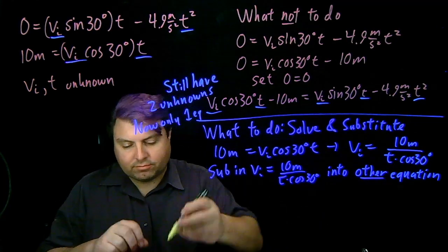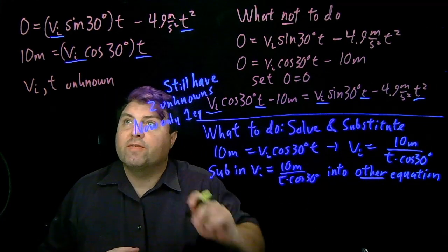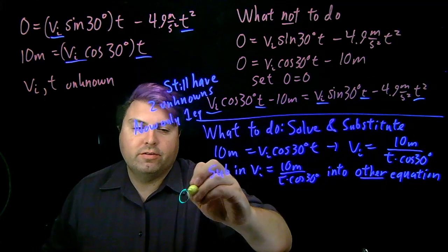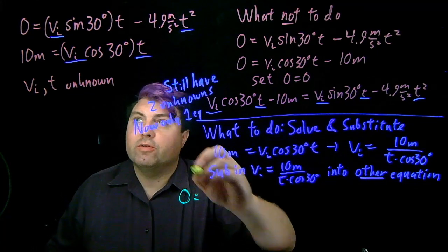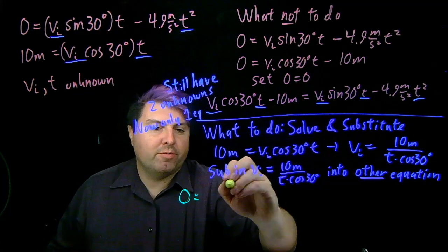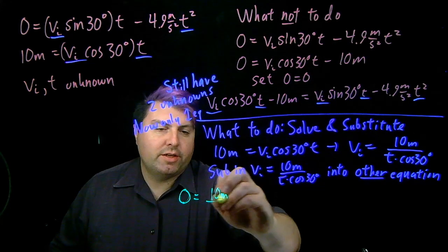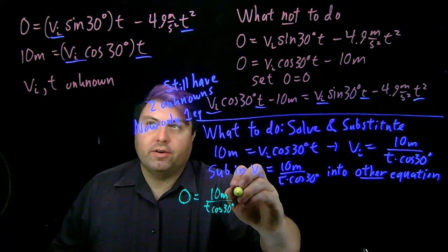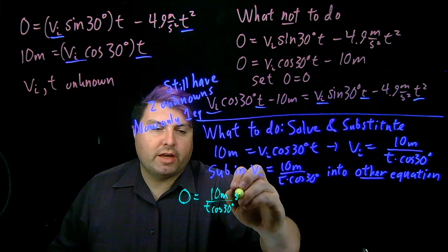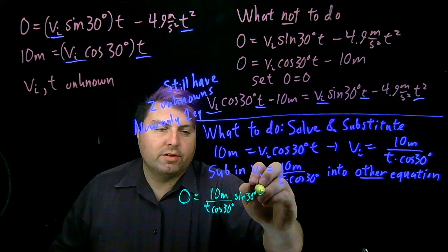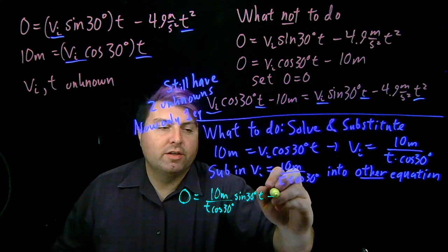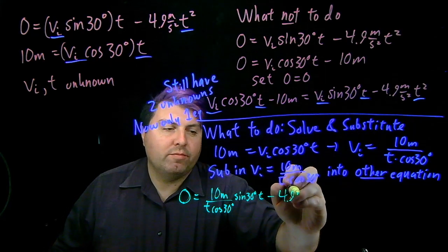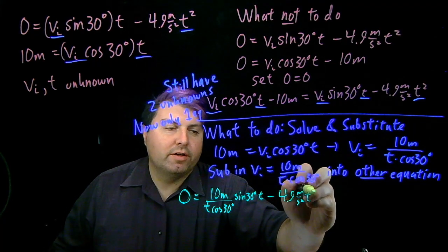So if I do that, getting yourself a new color, we have 0 = and then every time I see vi, I replace it with 10m / (t cos 30°), and then I have sin 30° times t minus 4.9 m/s² t².